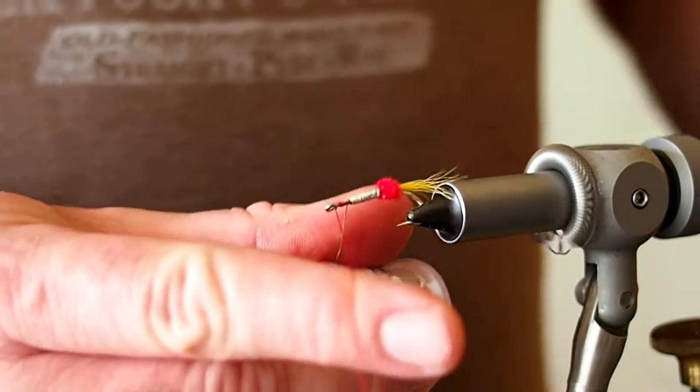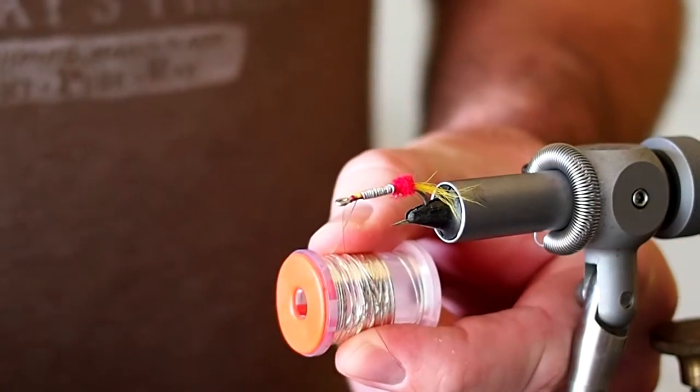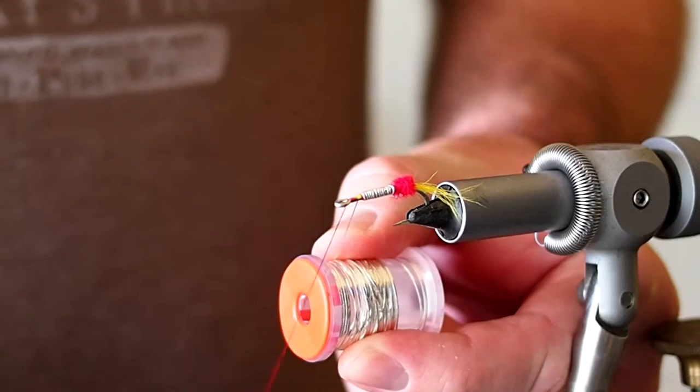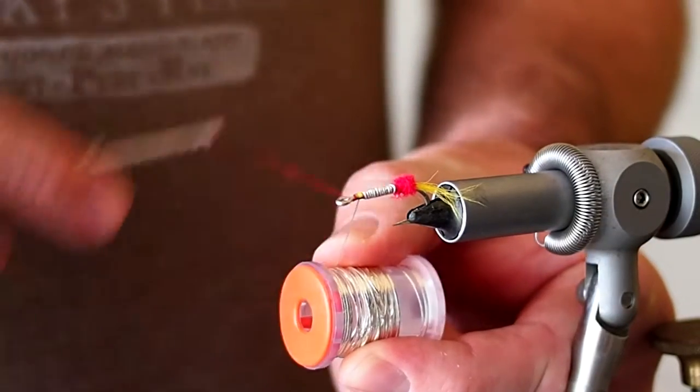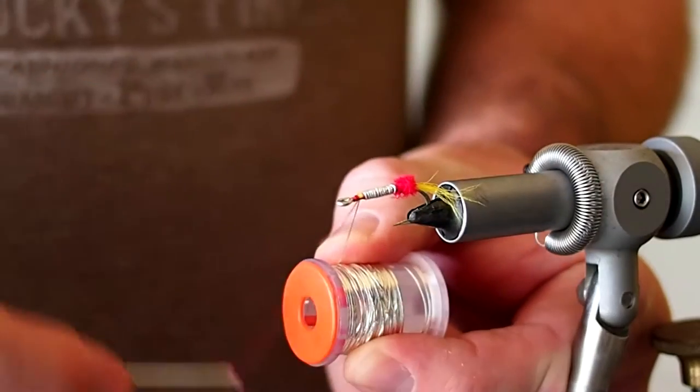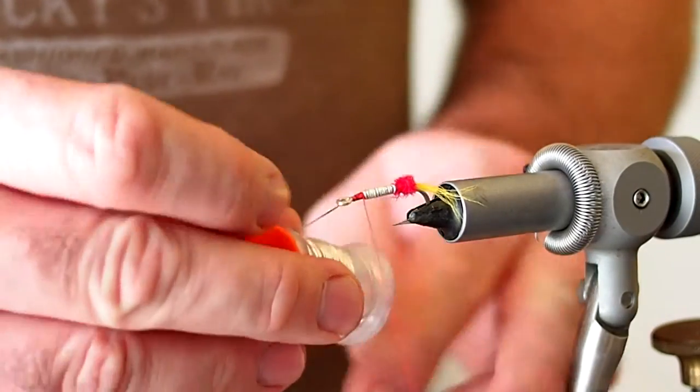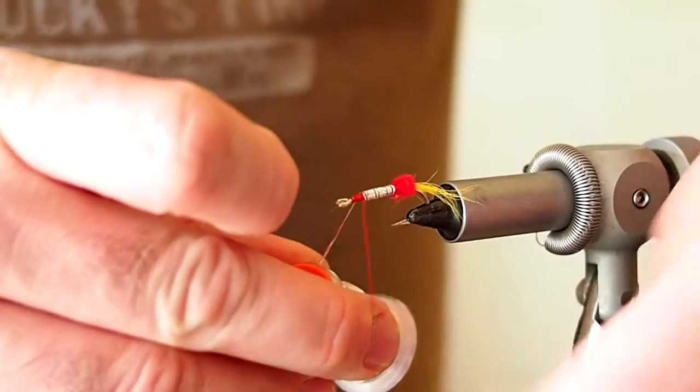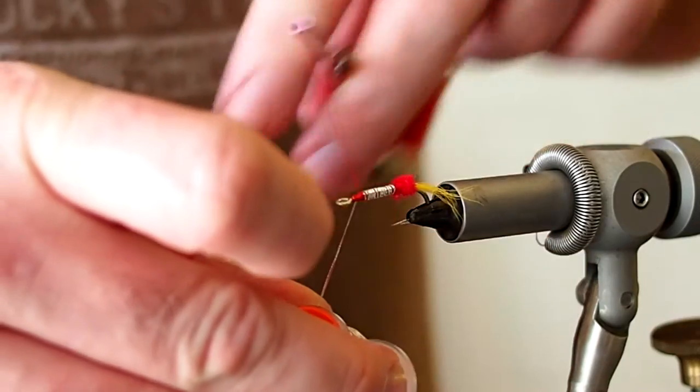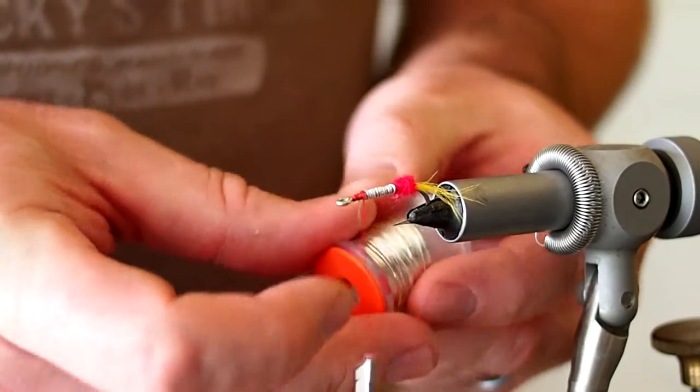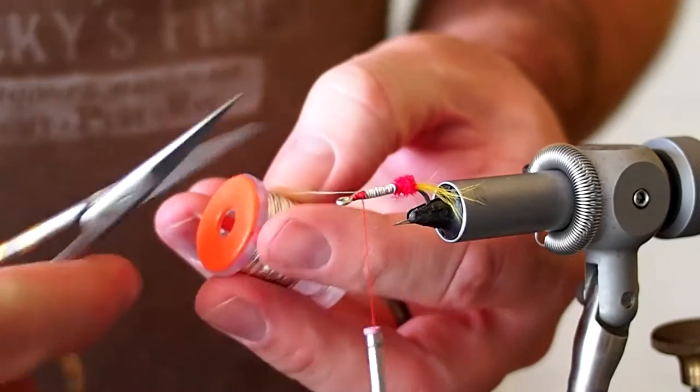I'm going to stop just short of my tie-in point, unwind my thread here, and then capture the silver tinsel with our thread, and snip away the excess.